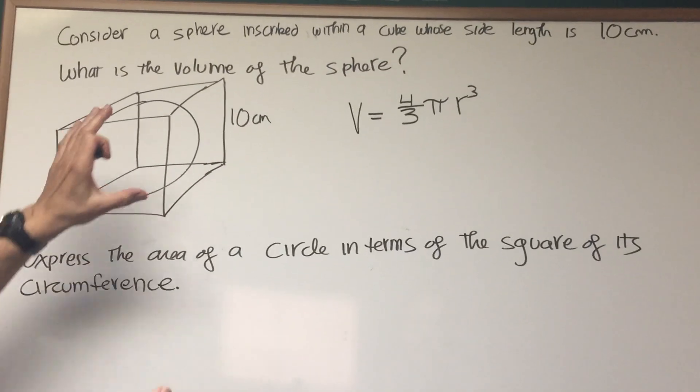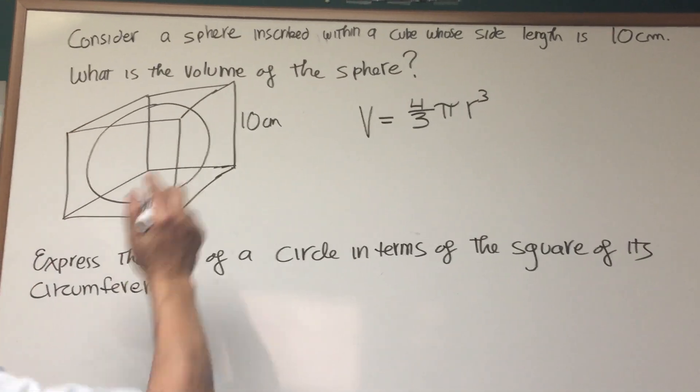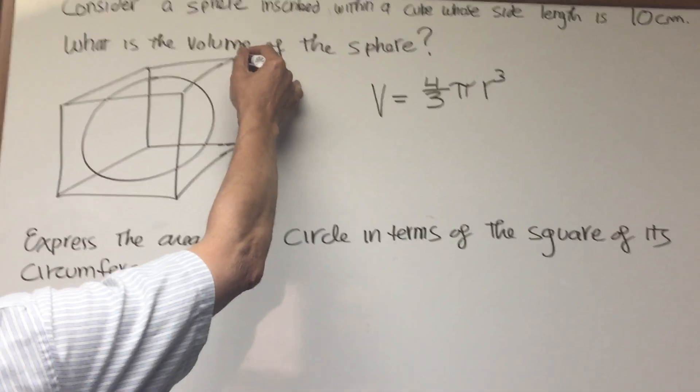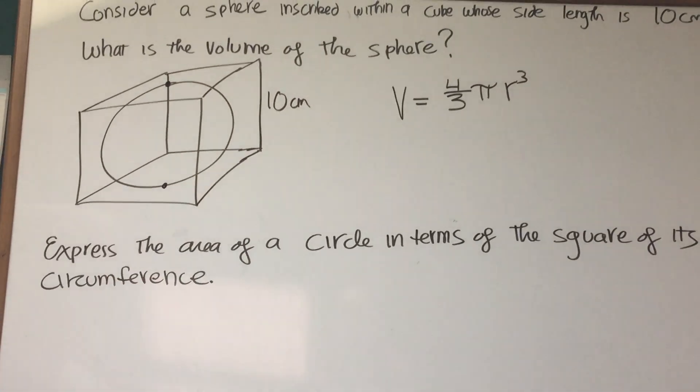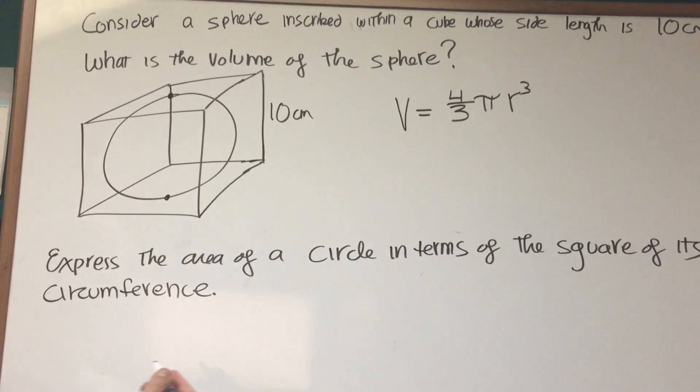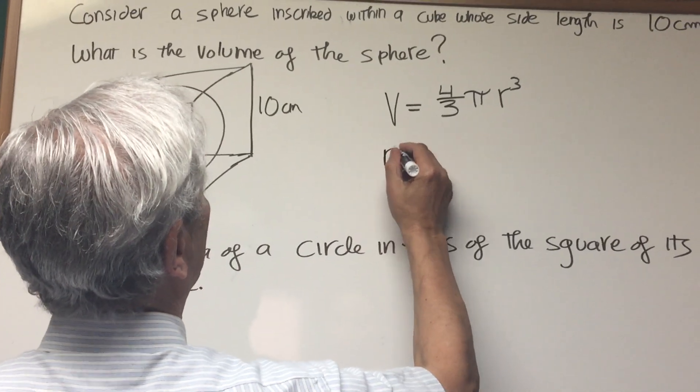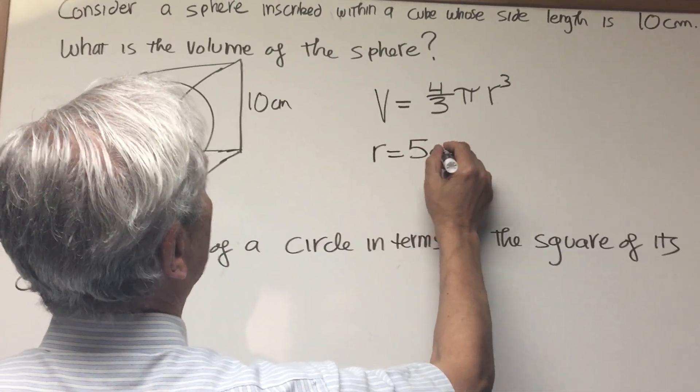Well, if the sphere is inscribed in the cube, then we know if the length of the cube is 10 centimeters, it's 10 centimeters from one end of the sphere to the other. We need the radius. The radius is going to be half that diameter. The radius is going to be five centimeters.